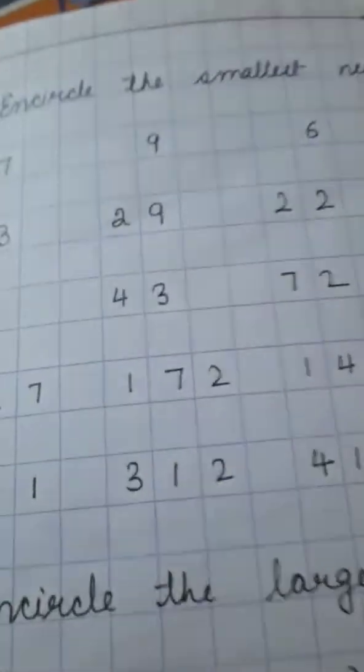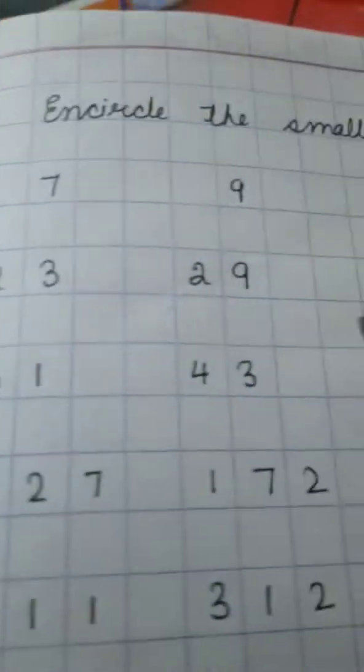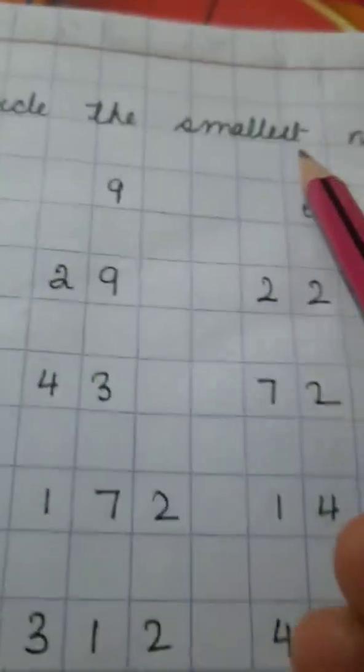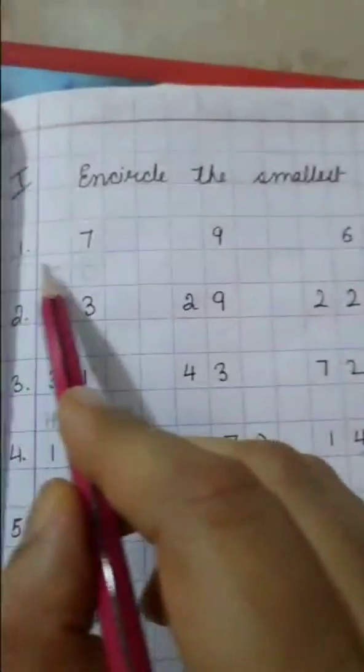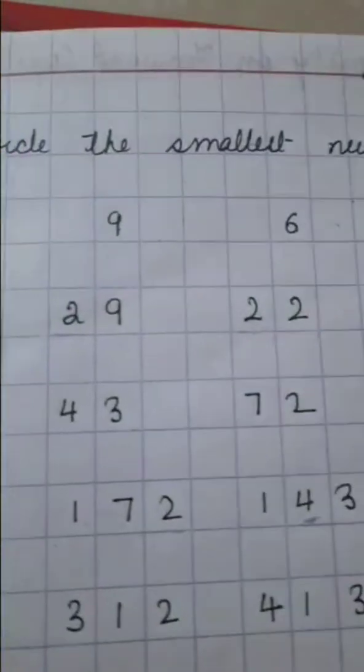Now we will learn how to encircle the smallest number. Here we go. Question number 1 is 7, 9, 6, 4. So 4 is the smallest number. These are single digit numbers, so no problem.